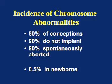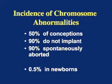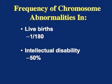So, if you do the math: 50% of conceptions have chromosome abnormalities, but 90% of those do not implant. That leaves 5% of conceptions with chromosome abnormalities surviving long enough to become a recognized pregnancy. But if 90% of those are miscarried, that leaves a half of 1% of conceptions having chromosome abnormalities that are survivable to birth — the same as 1 out of every 200 babies. The actual incidence in live-born babies is slightly higher: 1 in every 180 babies has a chromosome abnormality.